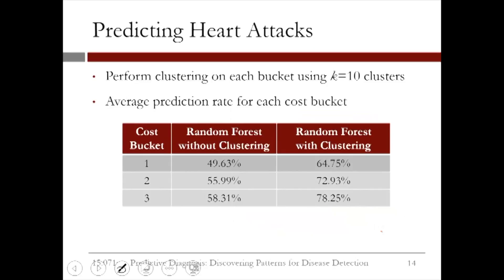Let us now discuss the performance of the clustering methods. We perform clustering on each bucket using k equals 10 clusters. In the table, we record the average prediction rate of each cost bucket. We observe a very visible improvement when we use clustering: from 49% to 64%, from 56% to 73%, from 58% to 78%.